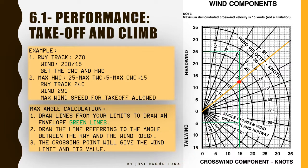To illustrate other scenarios: if you draw a line at a different angle, the first limitation encountered could be tailwind, or at another angle it could be headwind. That's how you determine which limitation is the binding constraint for any given runway and wind combination.